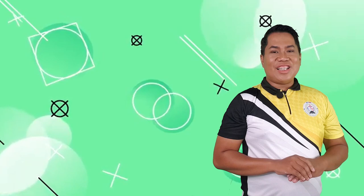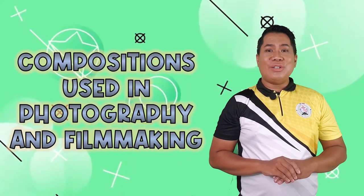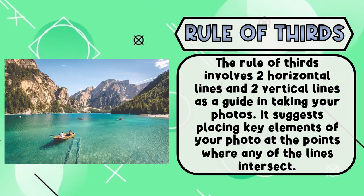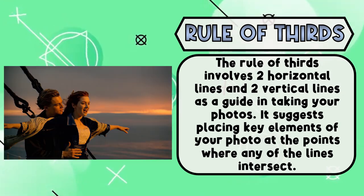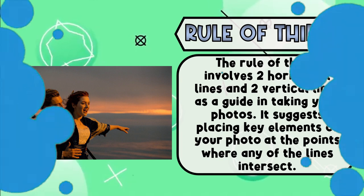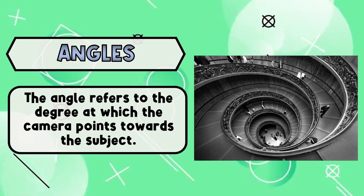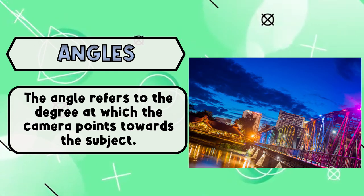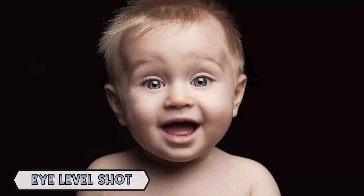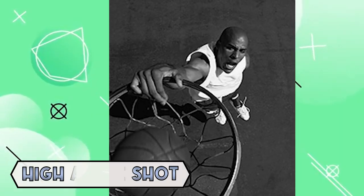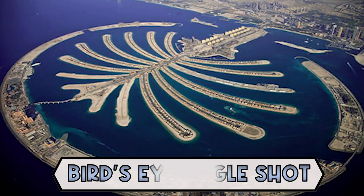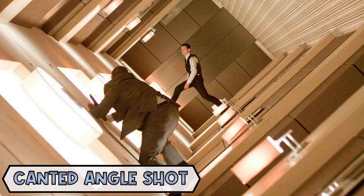For us to achieve an artistic photograph and film, we need to identify the compositions used in photography and filmmaking. Number 1, The Rule of Thirds, which involves two horizontal lines and two vertical lines as a guide in taking photos, suggesting placement of key elements at the points where the lines intersect. Number 2, Angles, which refers to the degree at which the camera points towards the subject. The different angle shots include: eye level shot, high angle shot, low angle shot, bird's eye angle shot, and canted angle shot.